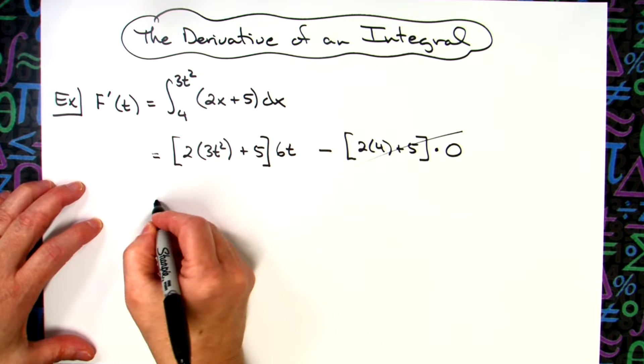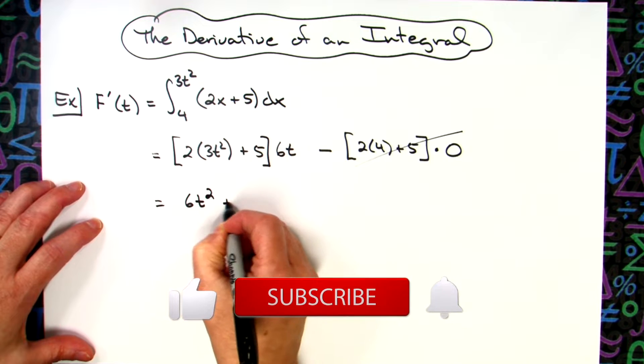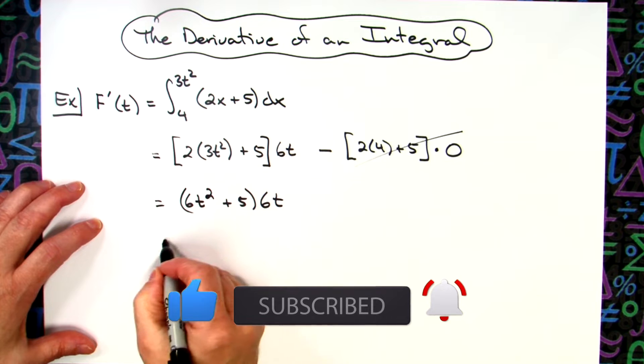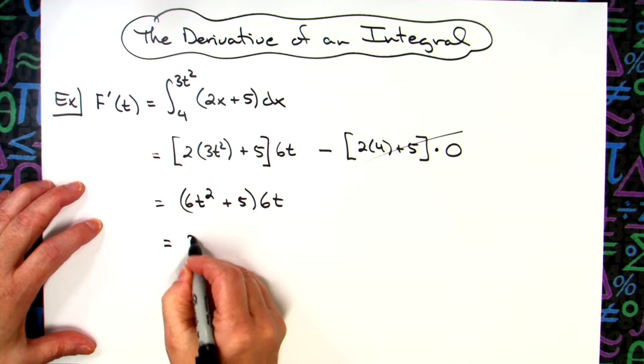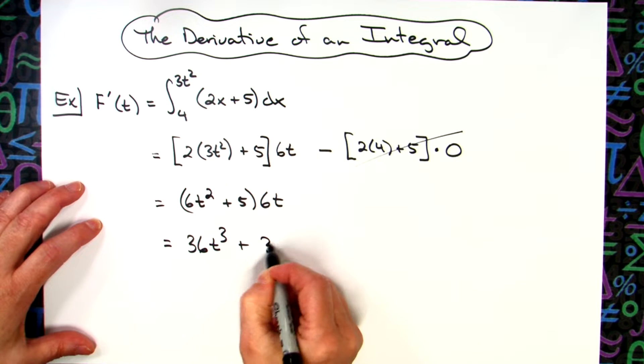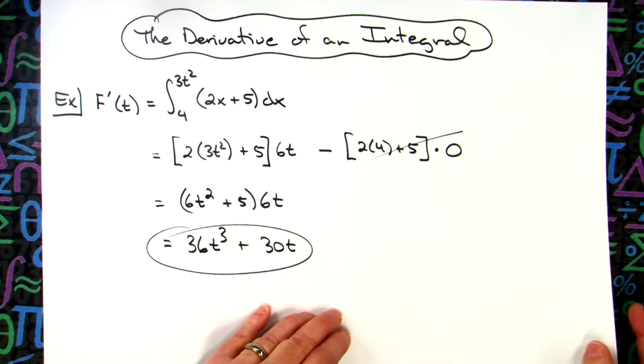Just a matter of simplifying here. So we'll have 6t squared plus 5, multiplying that there with the 6t, distributing it. We'll have a simplified answer of 36t to the third plus 30t. So pretty straightforward problem there.